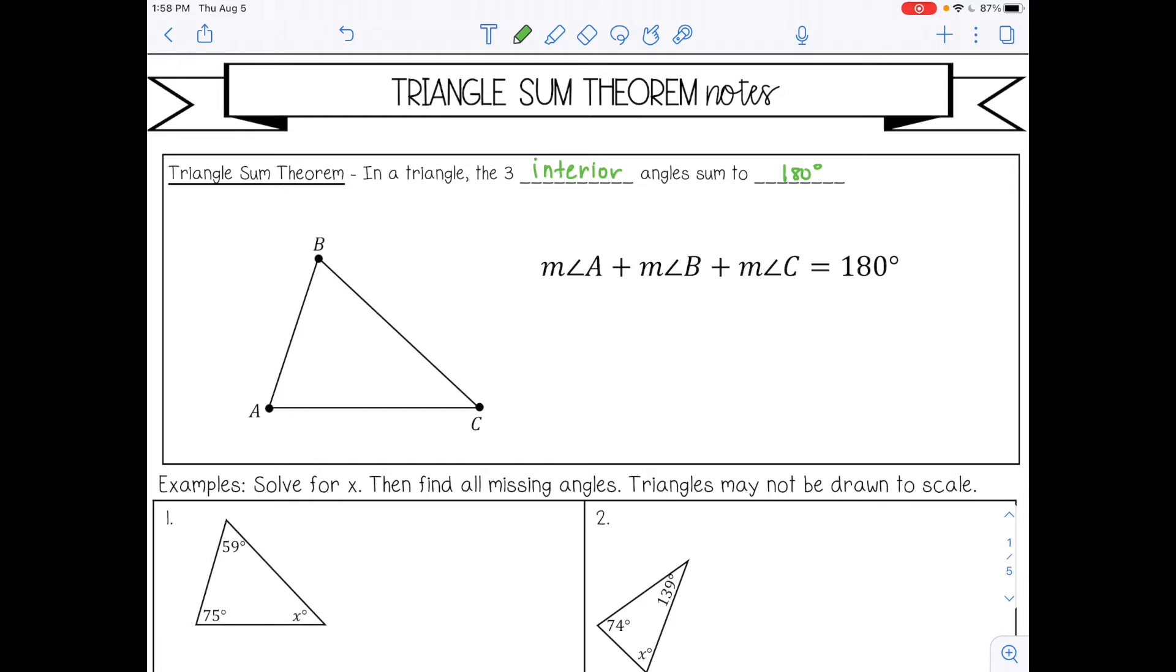For example, let's say that this angle is 58 degrees and this angle is 31 degrees. Then we can find angle B by setting up an equation. We don't know angle B, so we're just going to label that X for now.